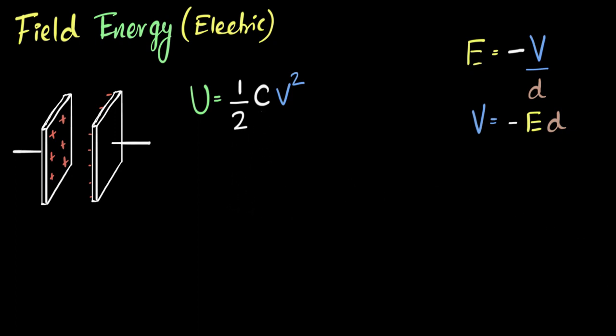All right. So the equation for the capacitance of parallel plate capacitance is, we've seen before, it's epsilon naught into A divided by d, where A is the area of the plate, and d is the distance between the plates. So if I substitute that over here, let's see what I get.